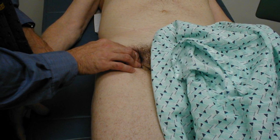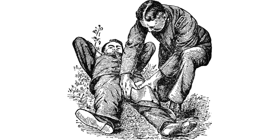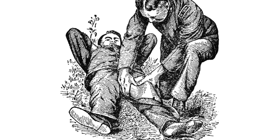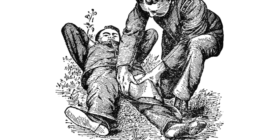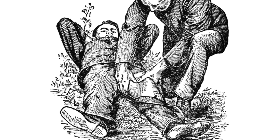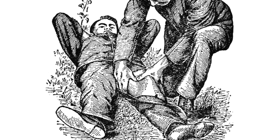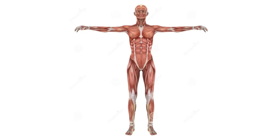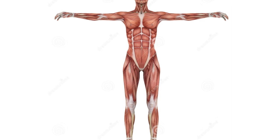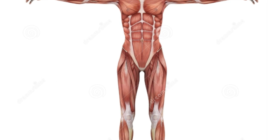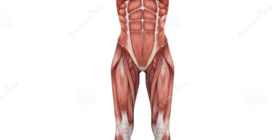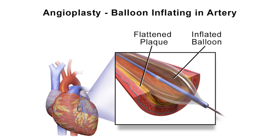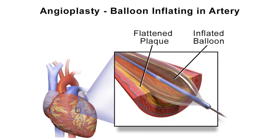The area of the femoral triangle can be used to feel for the femoral pulse. In cases of heavy bleeding, it can be stopped by applying pressure to points in the femoral triangle. This area also provides access to the femoral vasculature in procedures such as coronary angioplasty and peripheral angioplasty.